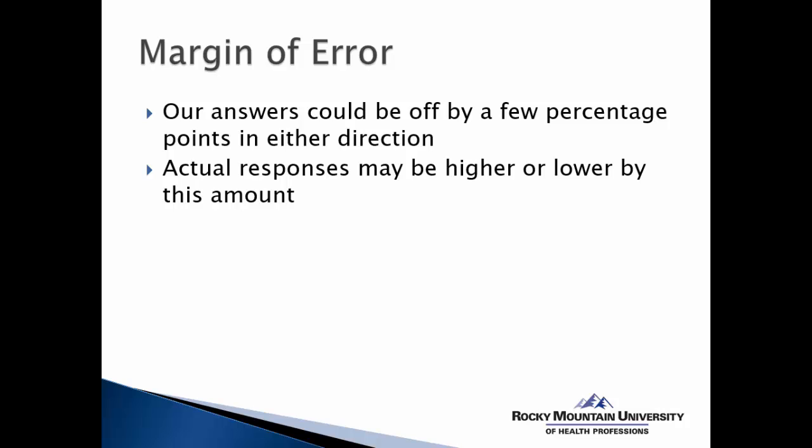So margin of error could be explained as our answers could be off by a few percentage points in either direction. So if you have a margin of error of plus or minus 3%, then the proportion of people that answered a certain way could be off by 3% either direction. And then secondly, you could also say the actual responses may be higher or lower by this amount, the margin of error, 3% or 5%, whatever your margin of error may be.